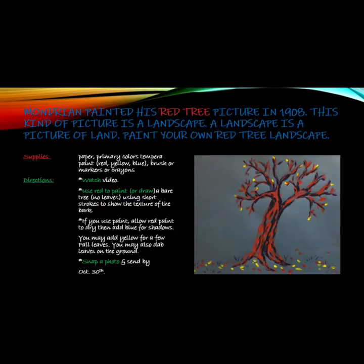Mondrian painted his red tree picture in 1908. This kind of picture is a landscape. A landscape is a picture of land.